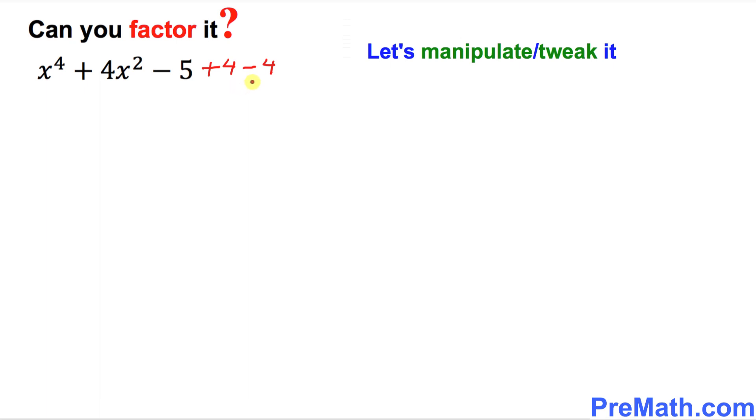Now I want you to focus on these terms. This, this and this. I want you to write them down together and combine these like terms. So I can write as x power 4 plus 4x square and then plus 4. You can see that. And here negative 5 and negative 4 is going to make negative 9.